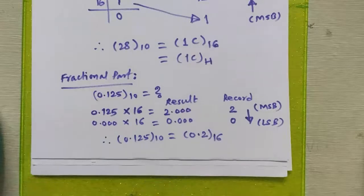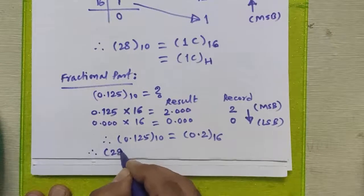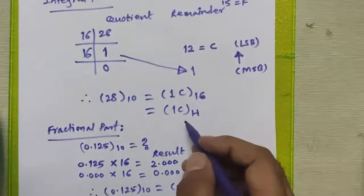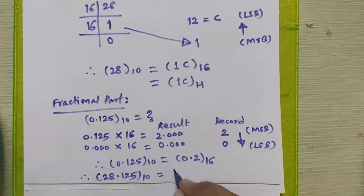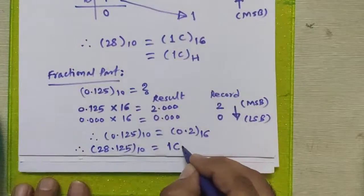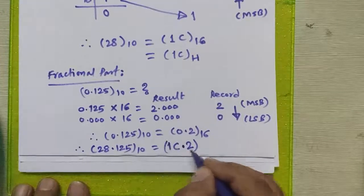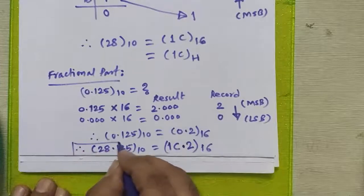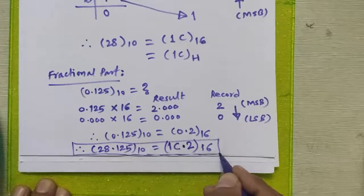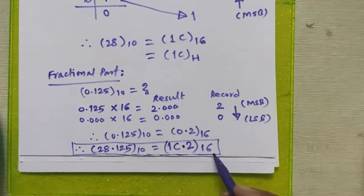To get the actual result, we need to combine both parts: 28.125 decimal to hexadecimal. The result of the integral part was 1C. The result of the fractional part was 0.2, which comes after the decimal point. So our final answer is 28.125 decimal equals 1C.2 in hexadecimal.